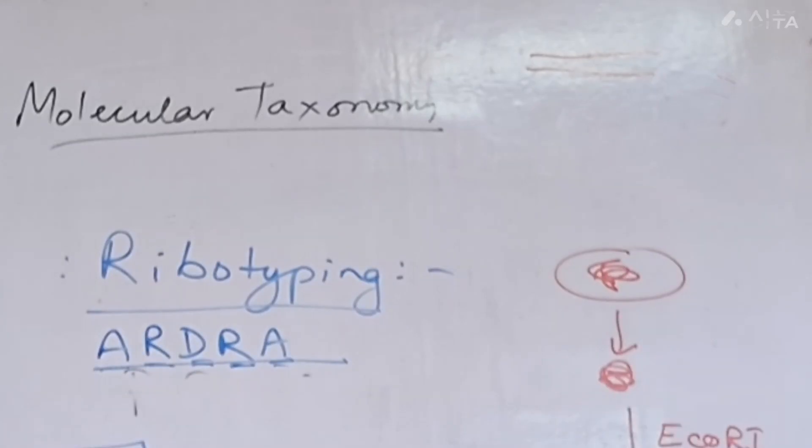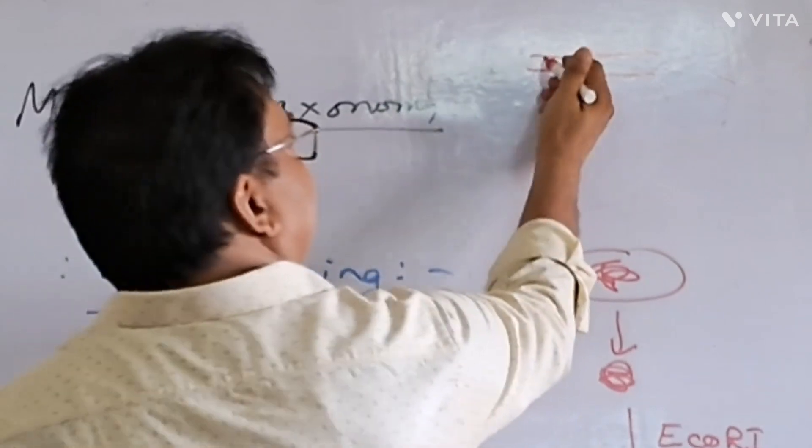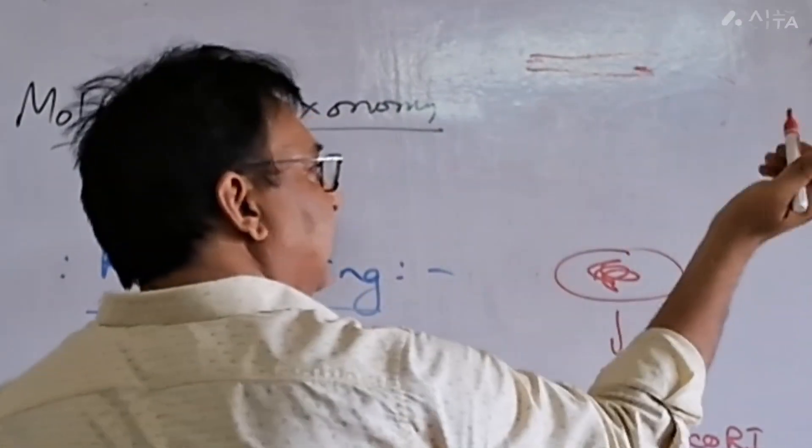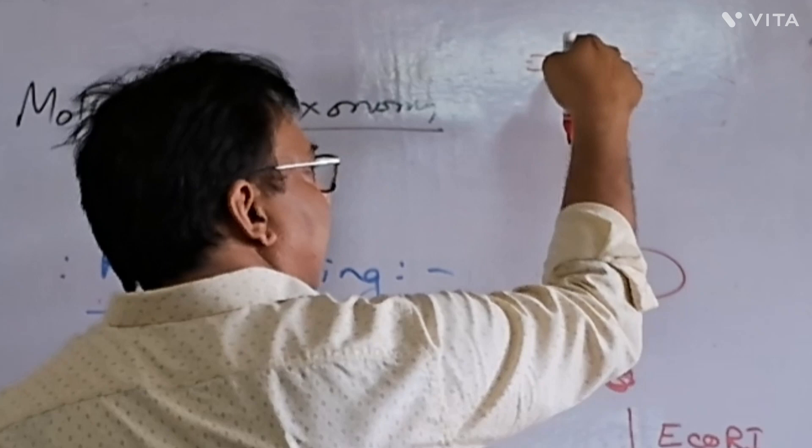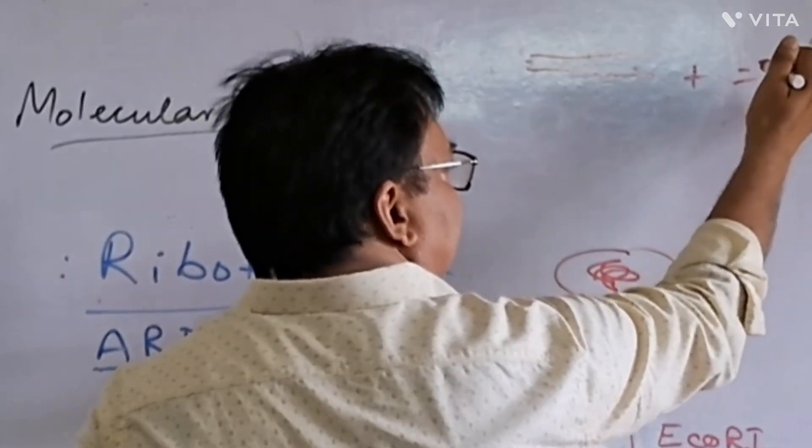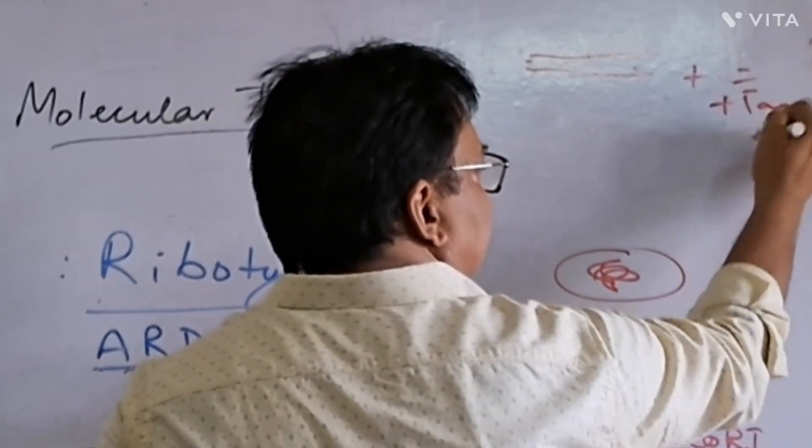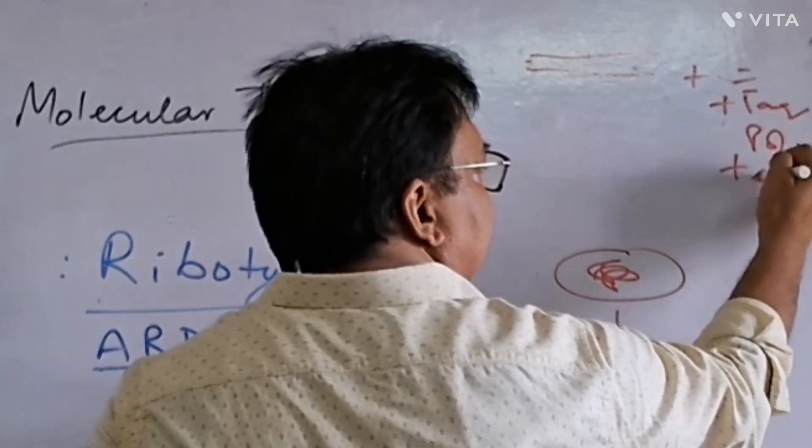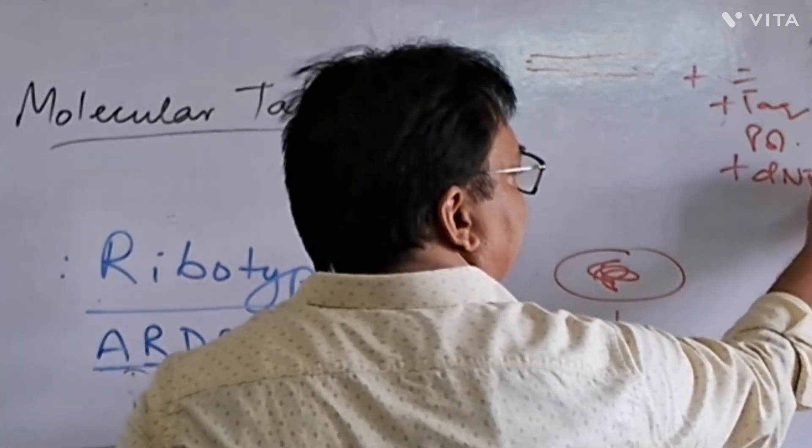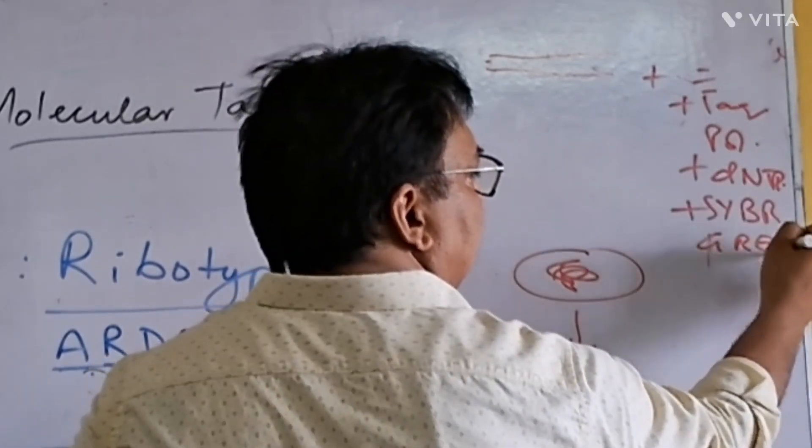For PCR, a pair of primers you have to use. So you have to have here and here and here and here. Now what is it? Template DNA plus primer plus TAQ polymerase plus dNTPs. You will get the same. PCR.